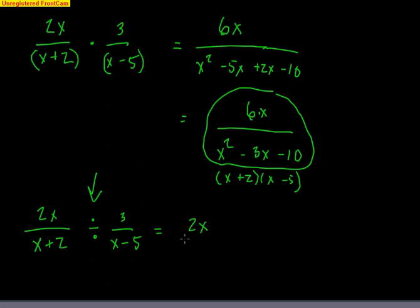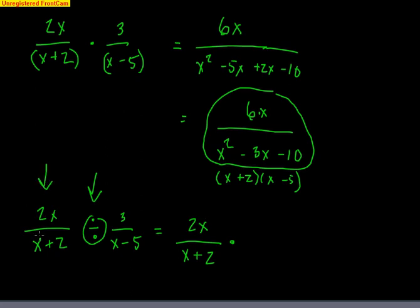So when you multiply: you leave — you change the division to multiplication. The first fraction on the left never changes, stays the same. But instead of dividing by this, you're going to multiply by its reciprocal, which is just flipping it over to (x minus 5) over 3.